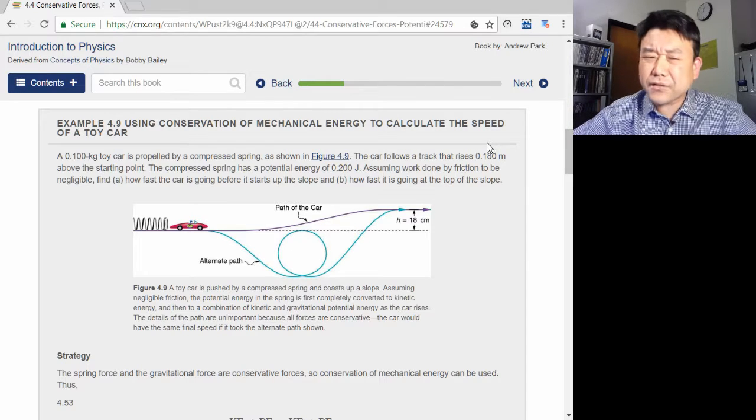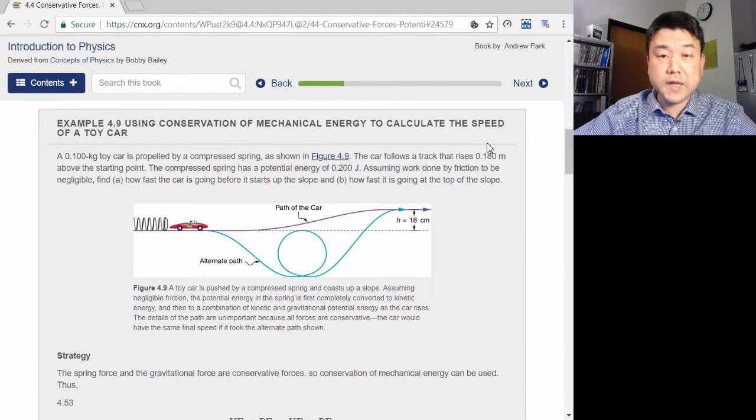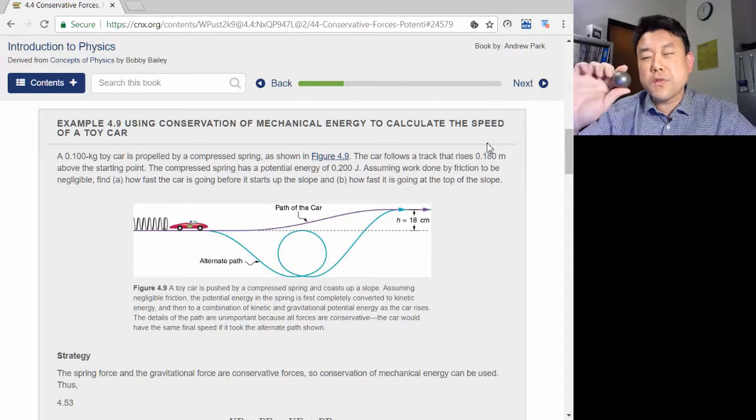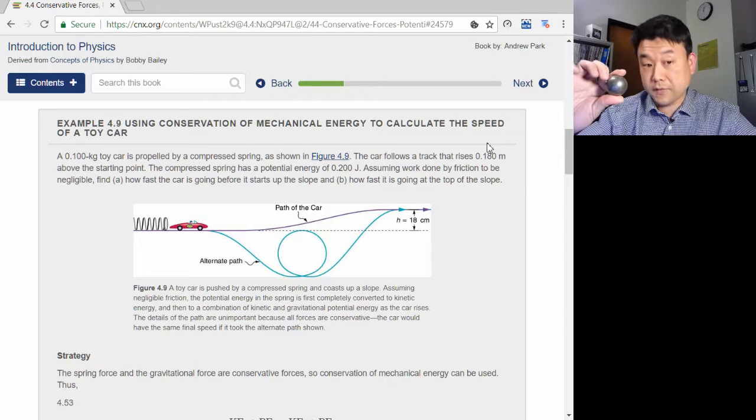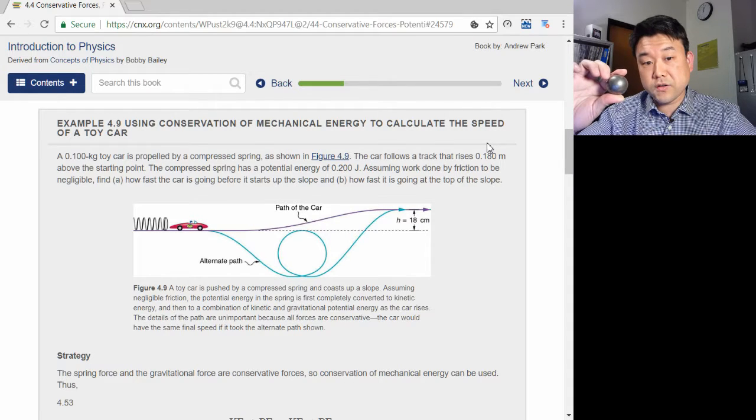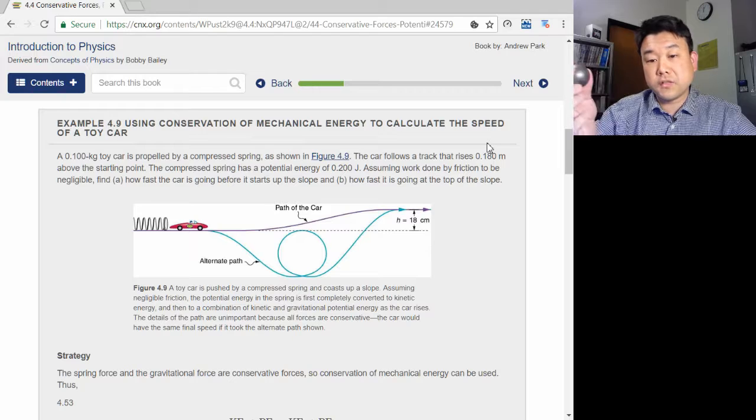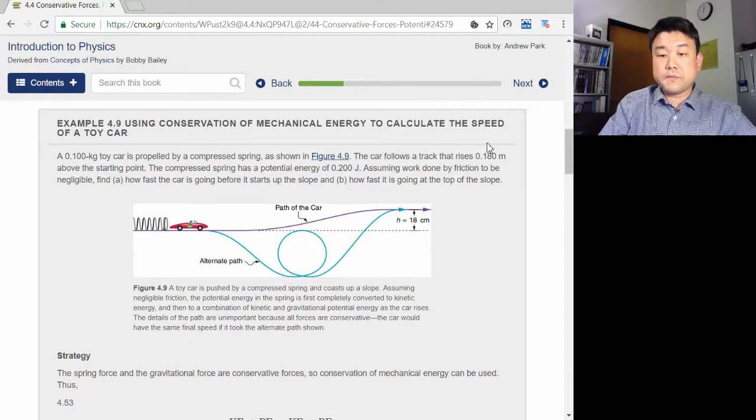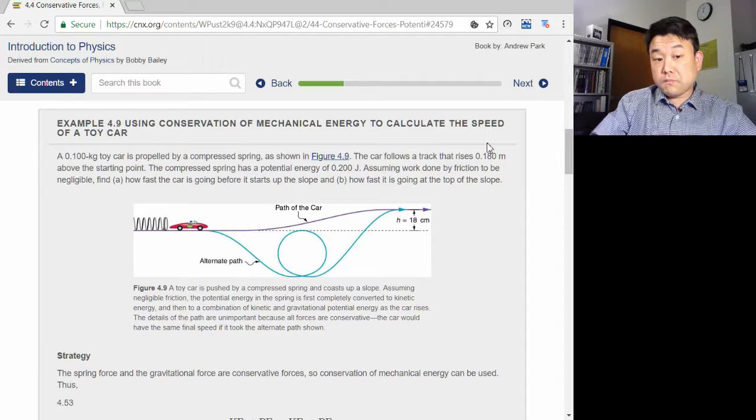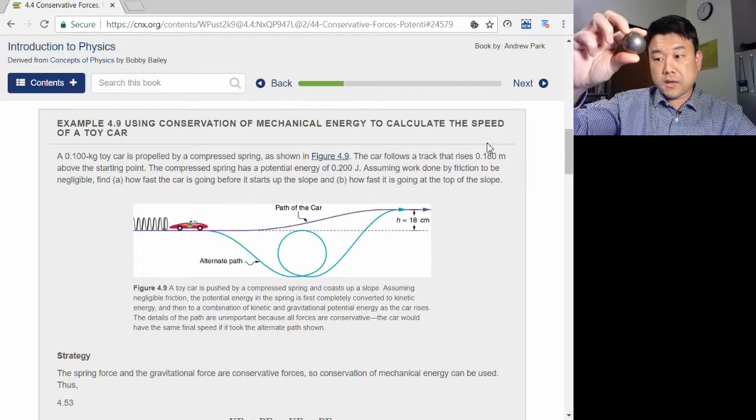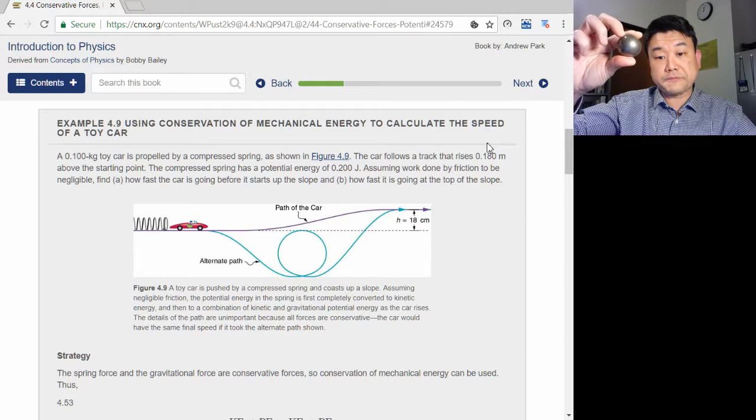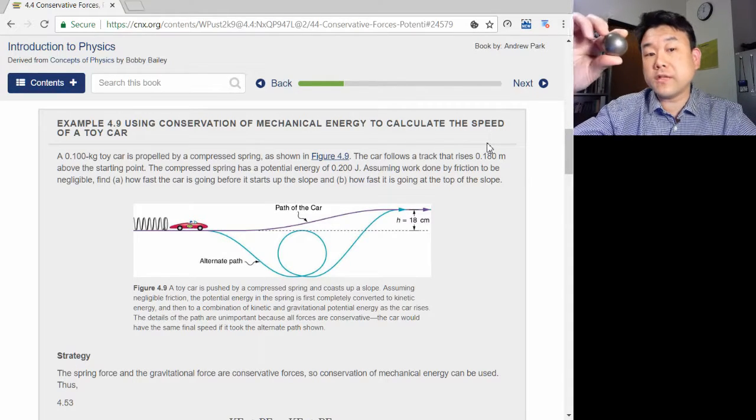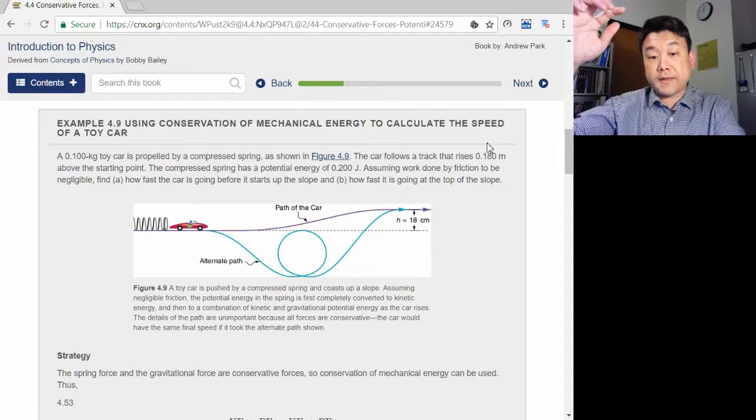But I like to describe conservative force as a predictable force. It's so predictable that when a conservative force does negative work to reduce kinetic energy, you can bet that you can get that energy back. Look at this thrown ball for an example. As it moves up, gravity does negative work and takes out kinetic energy. But at the top, I know that I can get all that kinetic energy back as the ball falls back down.